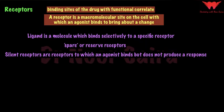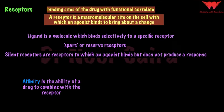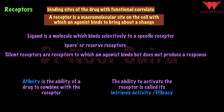After binding to the receptor, the ability to activate the receptor is called intrinsic activity. The ability of the drug to combine with the receptor is called affinity — that is, how much attraction there is for the drug to bind to the receptor. The ability to activate the receptor after binding is called intrinsic activity or efficacy, and it varies from minus 1 to 0 to plus 1.